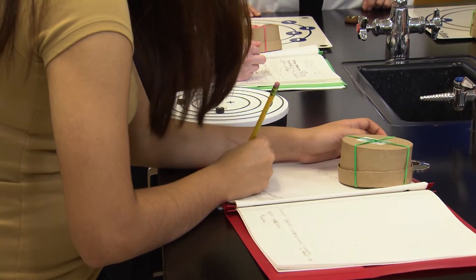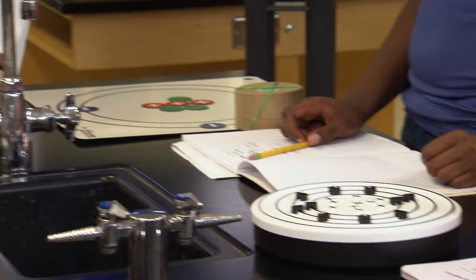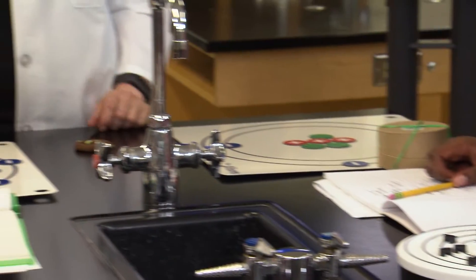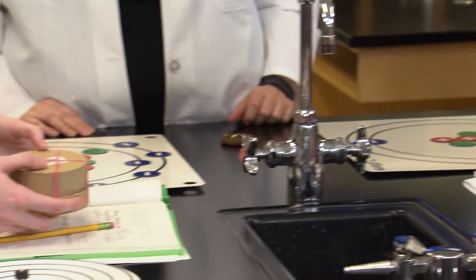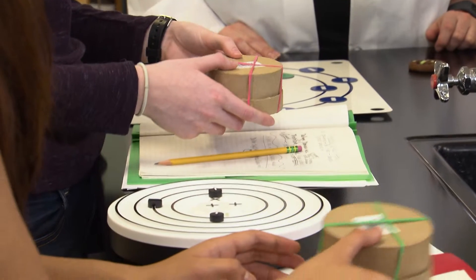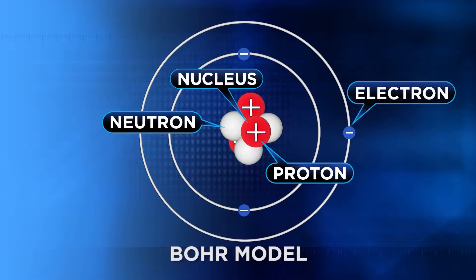Students drew and built models of the atom from the relatively simple model created by the Greek philosopher Democritus to the Bohr model of the early 20th century. And as we noted, we keep using these models until we find that they no longer help us explain the new facts we discover about atomic behavior.